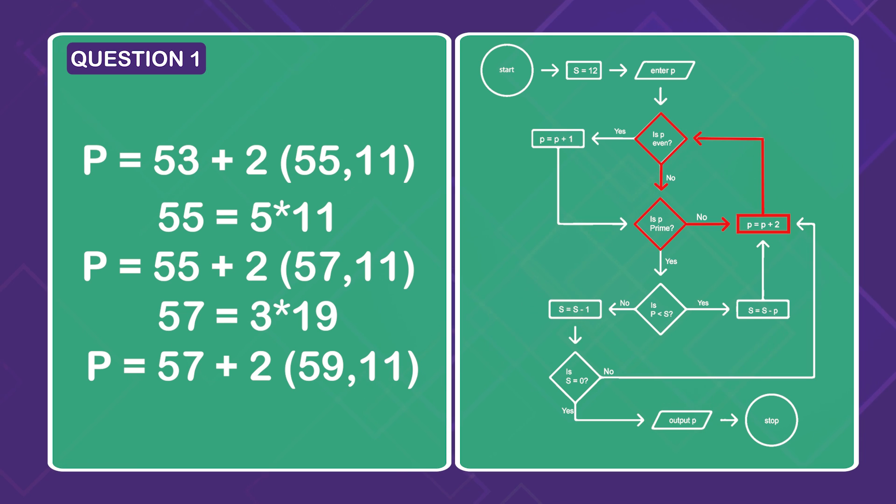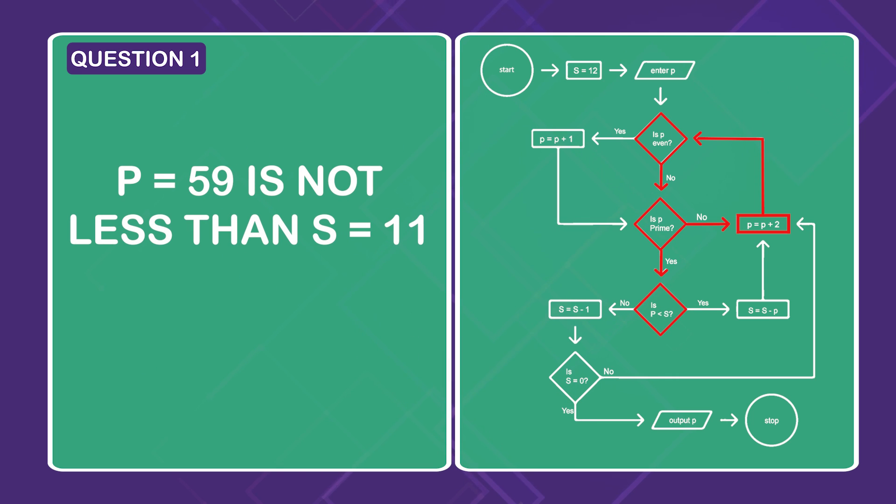Is p even? No. Is p prime? Yes. 59 is in fact prime. Again, drop down to the lower decision diamond. Of course, p equals 59 is not less than s equals 11. So subtract 1 from s to get (59, 10). That's it. s now has a value of 10. So the value of p at this point is p equals 59.